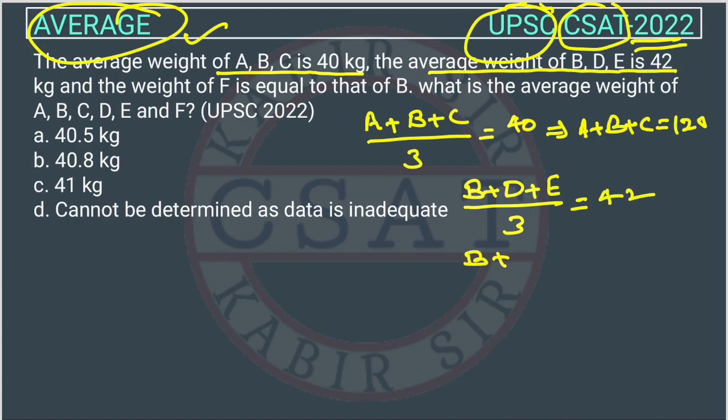So, B plus D plus E will be equal to what? It will be equal to 42 into 3 is equal to 126.